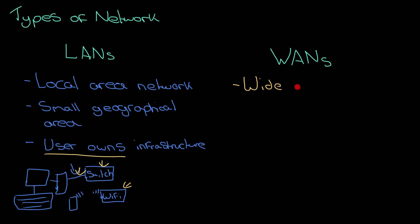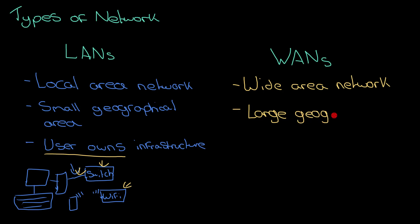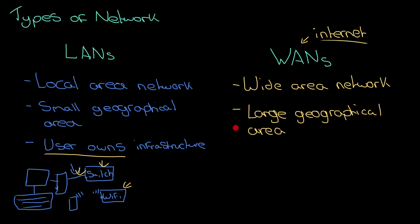So let's talk about WANs — Wide Area Networks. The obvious difference compared to a LAN is that while a LAN covers a small geographical area, a WAN covers a large geographical area. Large can mean across a city, across a country, or even across the world. The greatest and most well-known WAN is the internet, which obviously spans the entire planet — so that's pretty large.